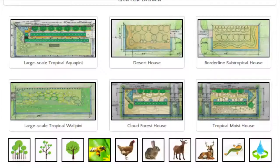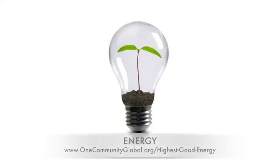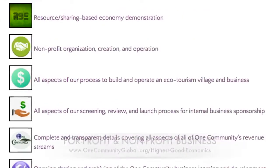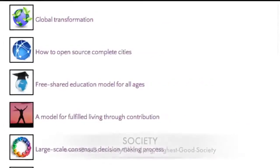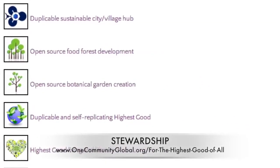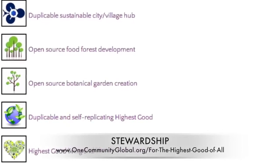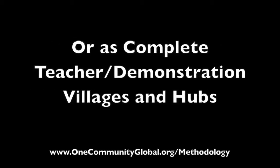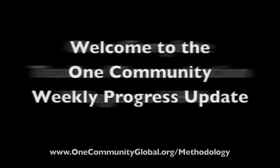This includes highest good approaches to food, energy, housing, education, for-profit and non-profit business creation, society, and true earth stewardship. We are creating all these things to be implementable as either individual components or as complete teacher demonstration villages and hubs. Welcome to the OneCommunity Weekly Progress Update.